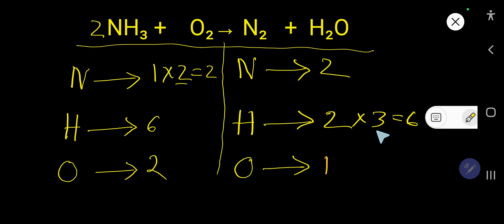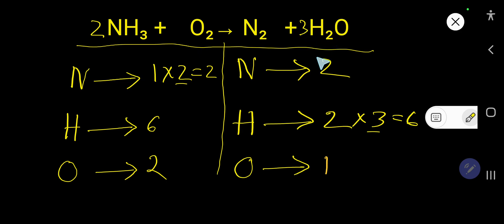Now balance hydrogen: six H on the left, two H on the right (in H₂O). Multiply H₂O by three — place coefficient 3 before H₂O. This hydrogen has come from NH₃, so we place 3 before H₂O. Now the number of hydrogen is 2 × 3 = six. The number of oxygen is now three.